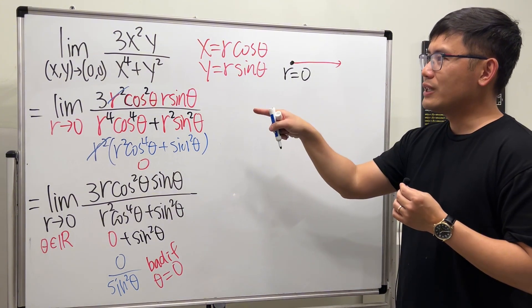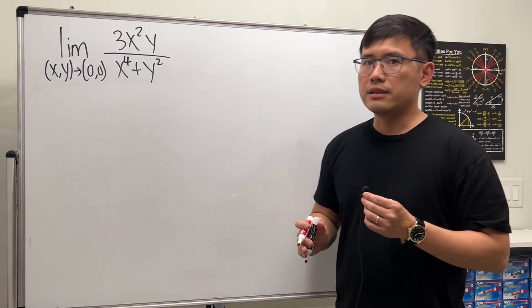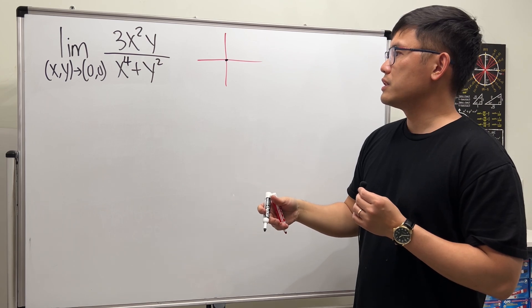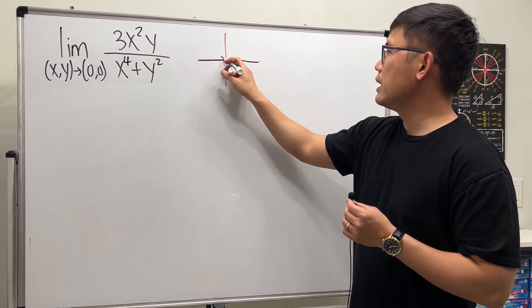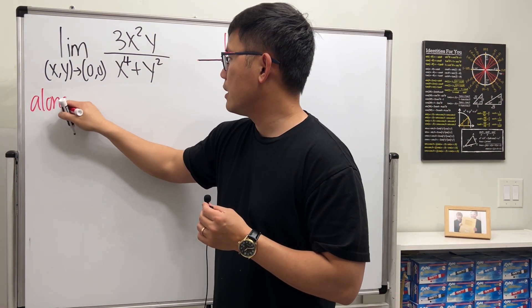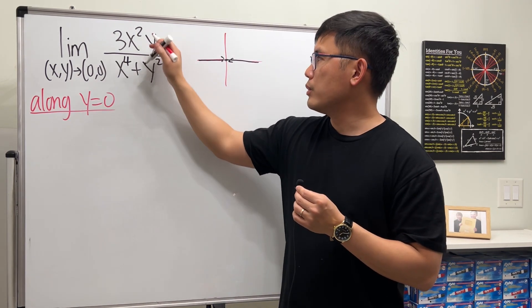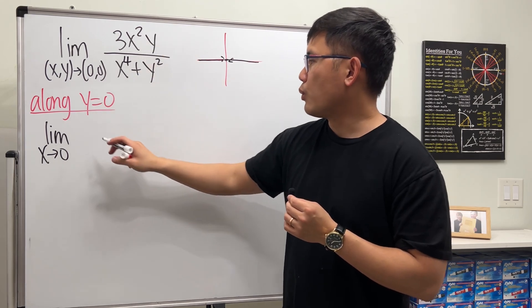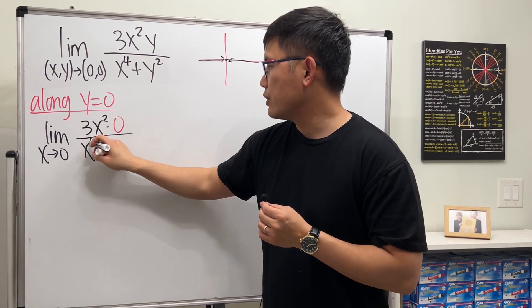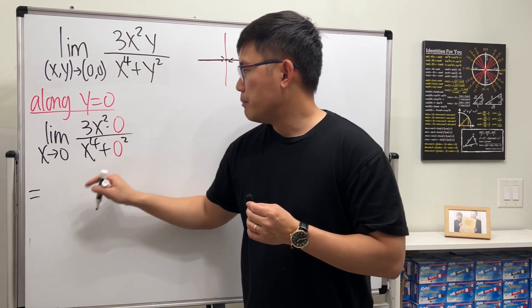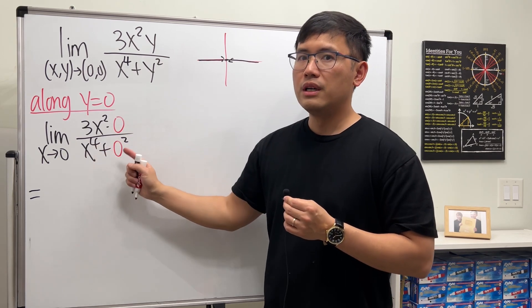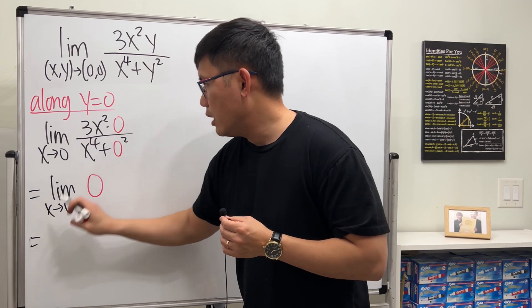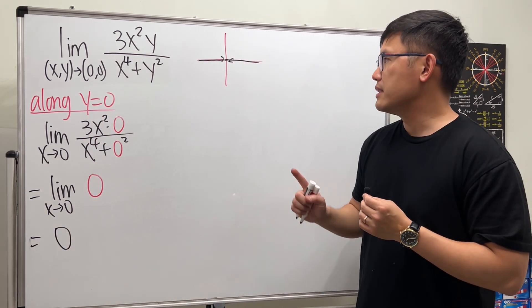When stuck, we try to show the limit does not exist by considering different paths to (0, 0). First, let's try the path y = 0. Along y = 0, plugging zero into all y's gives the limit as x → 0 of 3x²·0 over x⁴ + 0 = 0 over x⁴ = 0. So along this path the limit is 0.